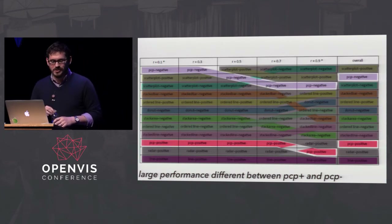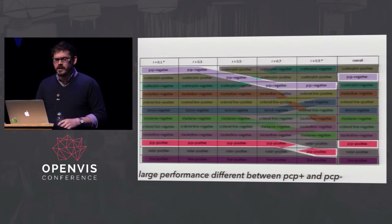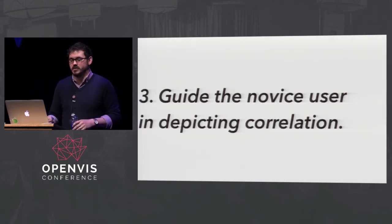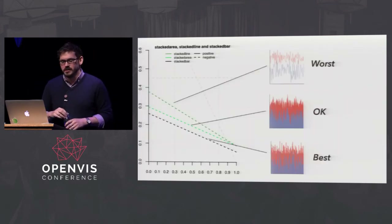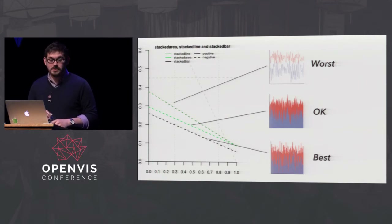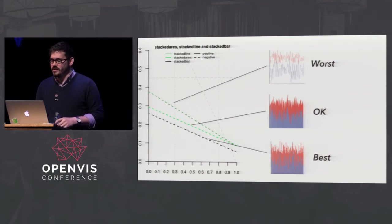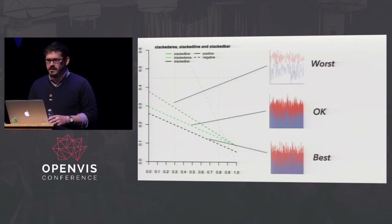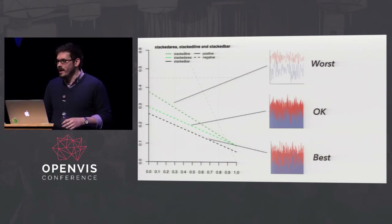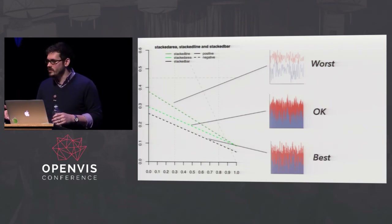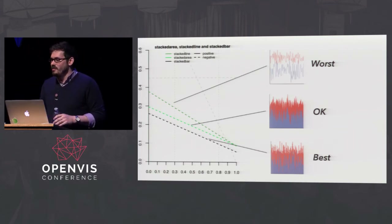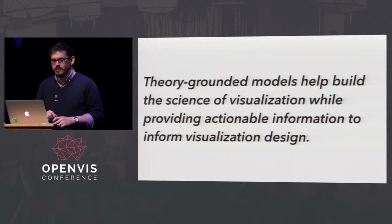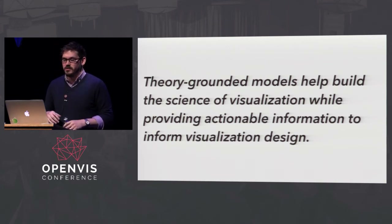In the noodle chart there's a clear gap between positive and negative parallel coordinates. One final thing you can do with a good model is guide a novice user in depicting correlation. Looking at charts one step away in Excel: the stacked line chart performed the worst, the stacked area chart performed okay, and the stacked bar chart performed the best - all statistically significant differences. If you had a tool for novice users to depict correlation, you could guide them toward the best choice or at least explain the trade-offs. A theory-grounded model can help build the science of visualization and provide information for visualization design.